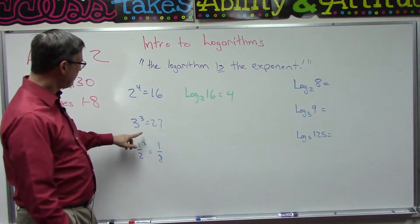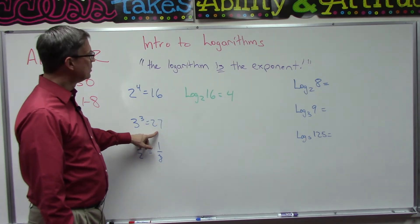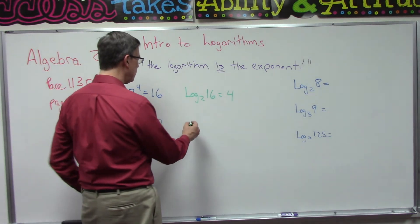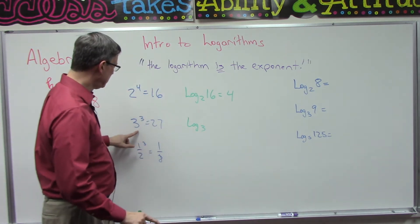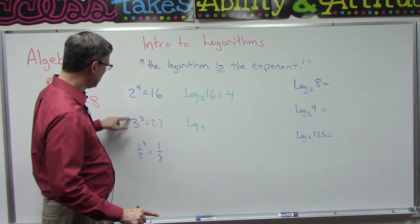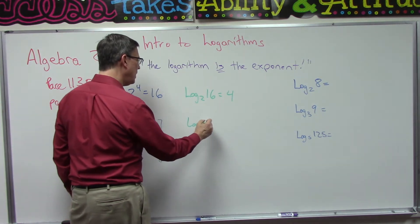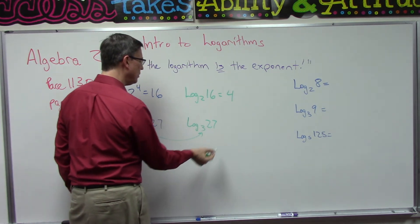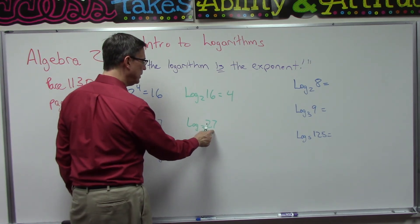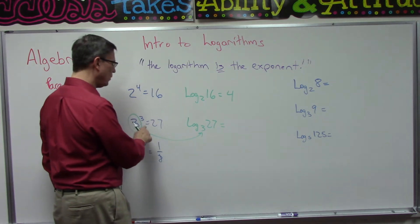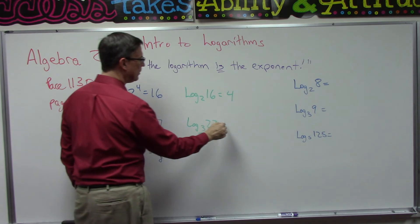Here: the base 3 raised to the third power is 27. So written as a logarithmic equation, we say log base 3 — this 3 is the base — of 27 equals what? What is the exponent? Because the logarithm is the exponent, the exponent is 3.